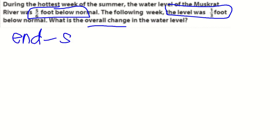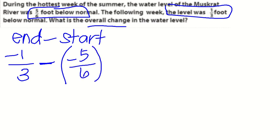During the hottest week of the summer, the water level of the Muskrat River was 5/6 feet below normal. The following week, the level was 1/3 foot below normal. What is the overall change in the water level? Think about what I was just saying. If you're doing end minus start to find the difference, what was your end level? It was 1/3 foot below, so negative 1/3 minus, and then where did you start? 5/6 of a foot below, so negative 5/6 because you're below.